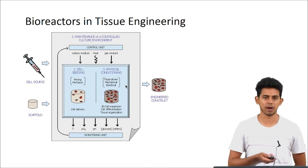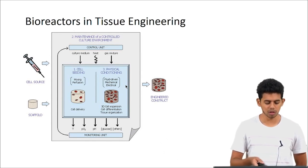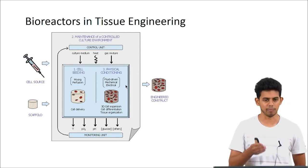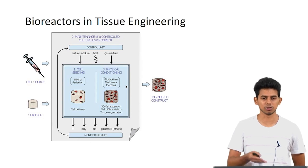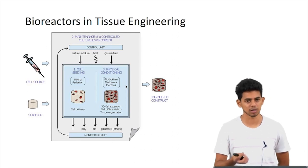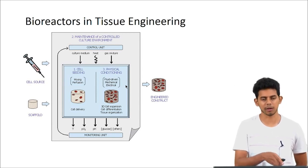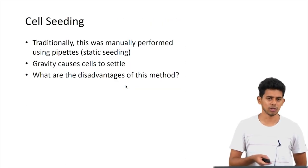Looking at the main functions of a bioreactor in tissue engineering - we have a cell source and a scaffold. The cells initially need to be seeded onto the scaffold, and then we should be capable of maintaining the right environment for the cell proliferation and growth. There should be some level of physical conditioning which is required - it varies depending on the tissue you are trying to grow. It can be fluid driven or mechanical or electrical conditioning. Also, all these parameters are continually monitored using sensors and they can be controlled so that the preferable environment is maintained.